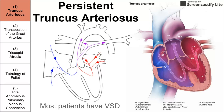Most patients also have a ventricular septal defect with persistent truncus arteriosus, and we can see that in the picture. The ventricles don't have much of a septum between them, allowing for even more mixture of blood as it's pumped into the aorta and the pulmonary artery. This is persistent truncus arteriosus — mixed blood goes into both the systemic and the pulmonary circulation.